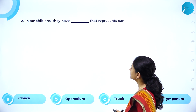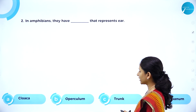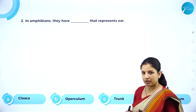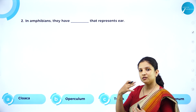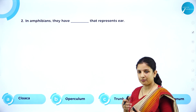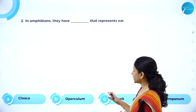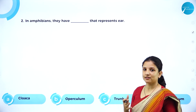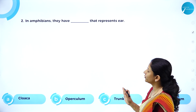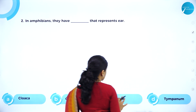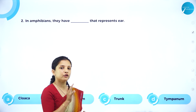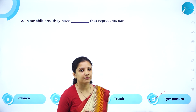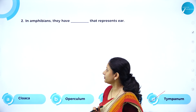Next question: In amphibians, the external opening that represents the ear is called — cloaca? No, cloaca is a chamber into which all the organs of the amphibians come and meet. Operculum? No, operculum is the covering present on the gill slits and has nothing to do with the ear. Trunk? No, trunk refers to the body of the amphibian. Tympanum? Yes — tympanum is the external opening that represents the ear in amphibians.